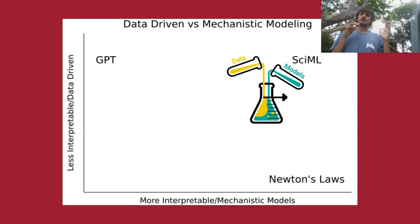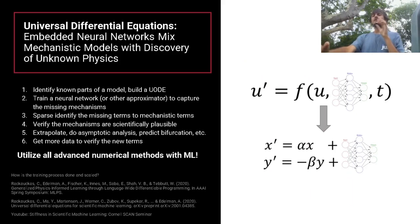Often is the case that you have experimental data that you don't have an explanation for in a mechanistic way. On the other hand, it's also often the case you have analytical expressions and no experimental data. How do you mix these to get the most interpretable model that is also the most accurate?